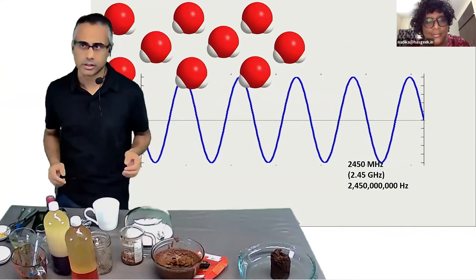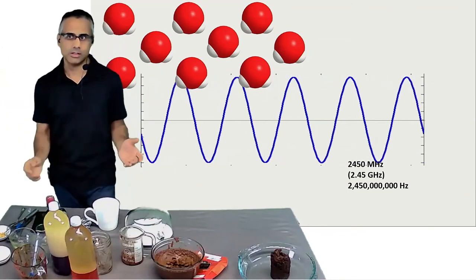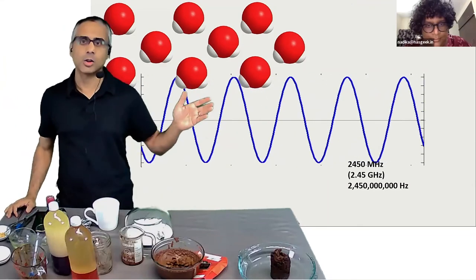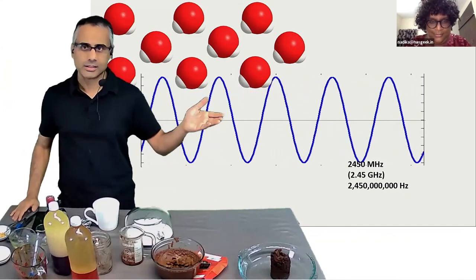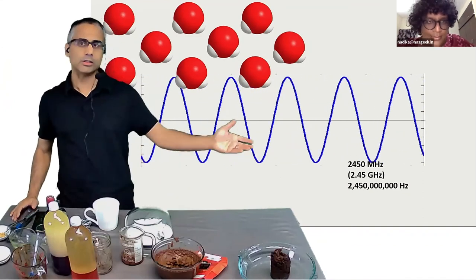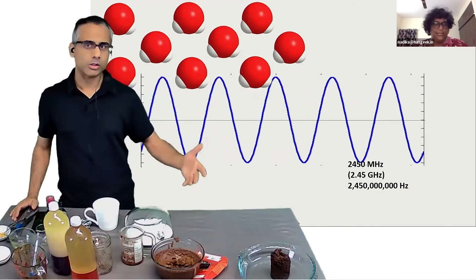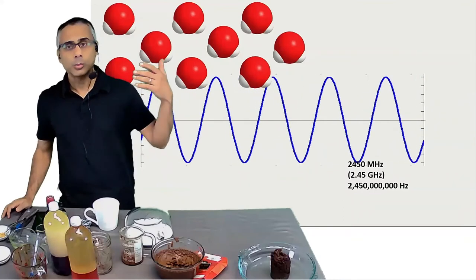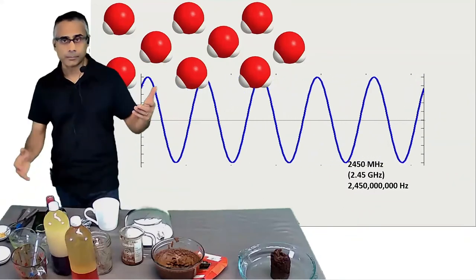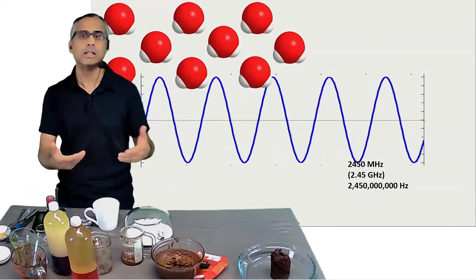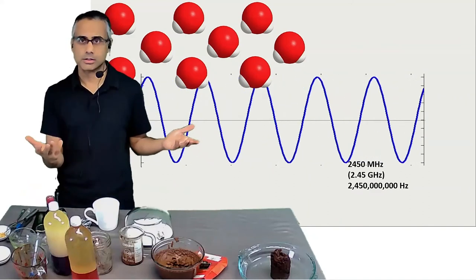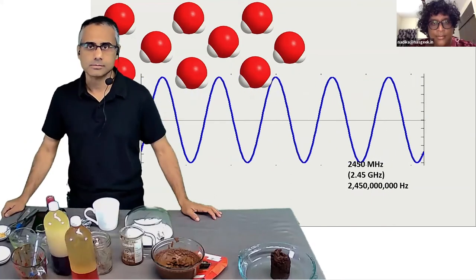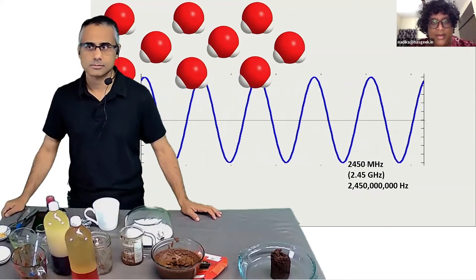Metal is generally okay in a microwave — you just have to be careful about sharp parts that could cause arcing. You don't want to do it for a long time, and it's not the intended use. In chemistry labs, microwave reactors are actually used as an energy source — you just have to use it appropriately.